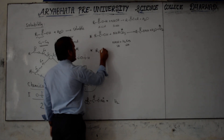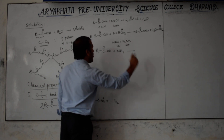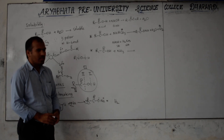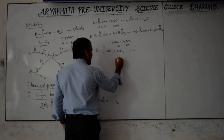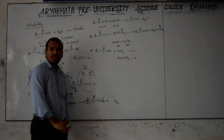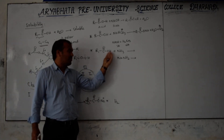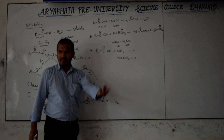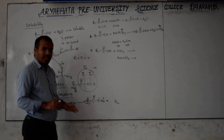Now as homework: what will form when R-C(=O)-OH reacts with ammonia (NH₃)? This will come in the next reaction discussion. For now, note that the O-H bond breaking type reactions have been covered.